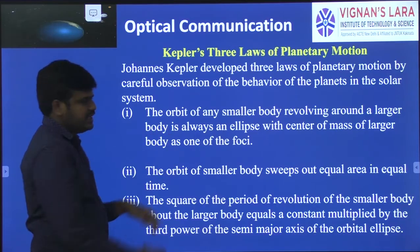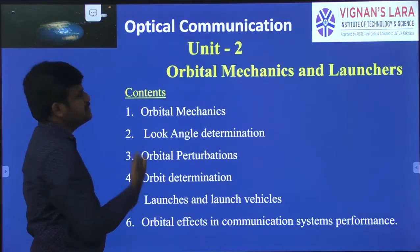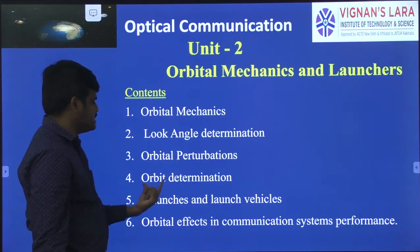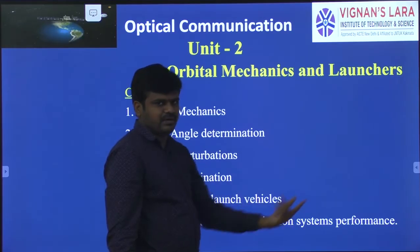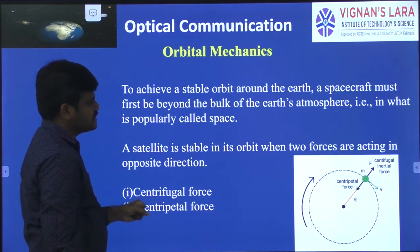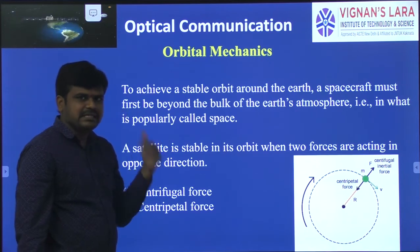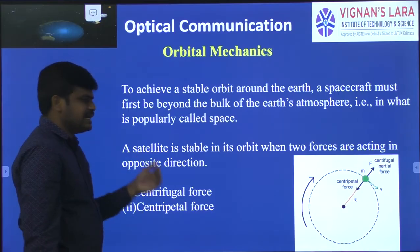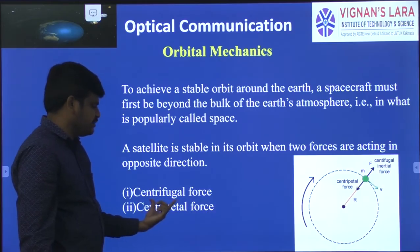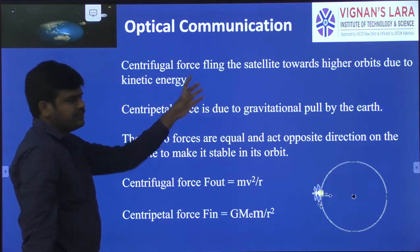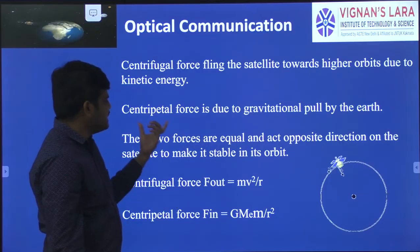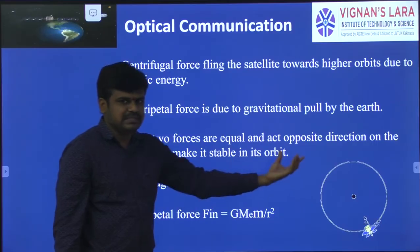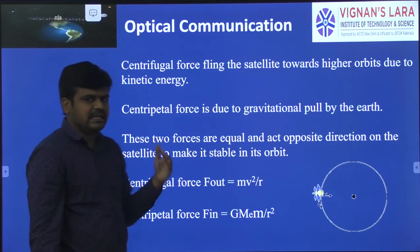Let us recollect what we have learnt today. We started Unit 2, Orbital Mechanics and Launchers. Its contents include orbital mechanics, look angle determination, orbital perturbations, orbit determination, launches and launch vehicles, and orbital effects in communication system performance. For orbital mechanics: to achieve a stable orbit, two equal forces must act on the satellite in opposite directions — centrifugal force, which pulls the satellite into higher orbits, and centripetal force due to the Earth's gravitational pull, which drags the satellite towards the Earth. When equal and opposite, the satellite is stable.